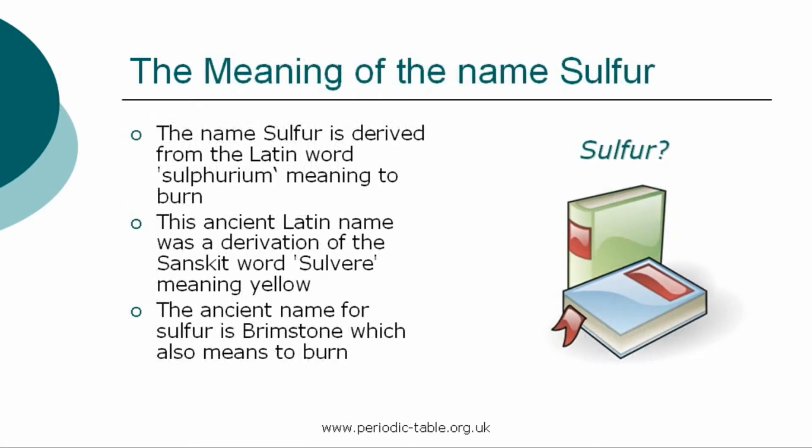The name sulfur originates from the Latin word sulfurium, meaning to burn yellow. The Latin word was a derivation of the Sanskrit word sulvir, meaning yellow. The ancient name for sulfur is brimstone, which came from the Old English word brinsen, meaning burning stone. Both the words sulfur and brimstone therefore translate to mean to burn.